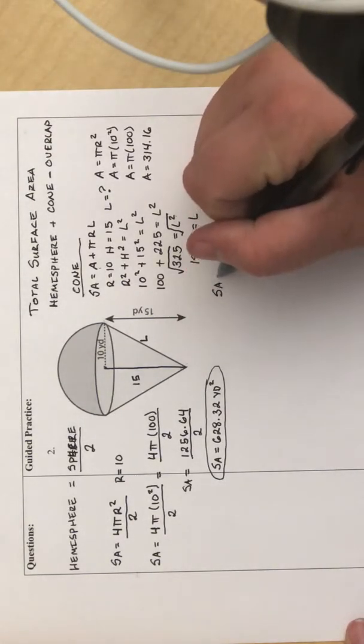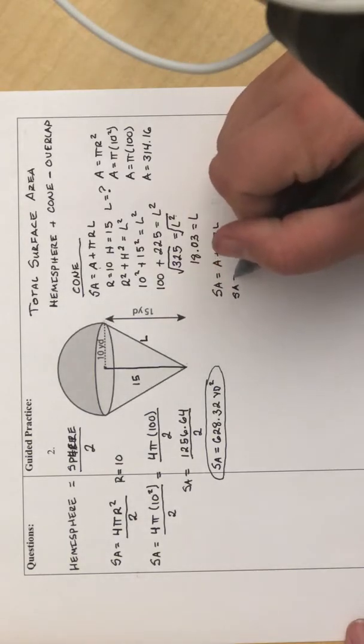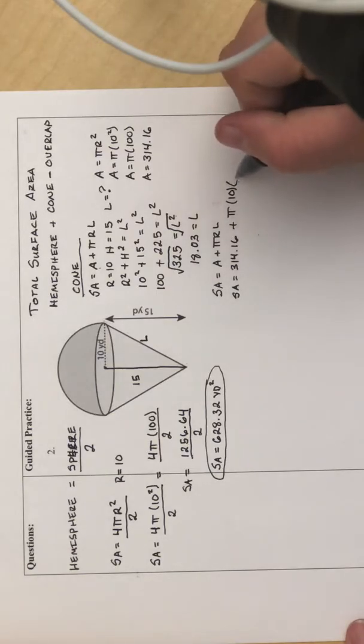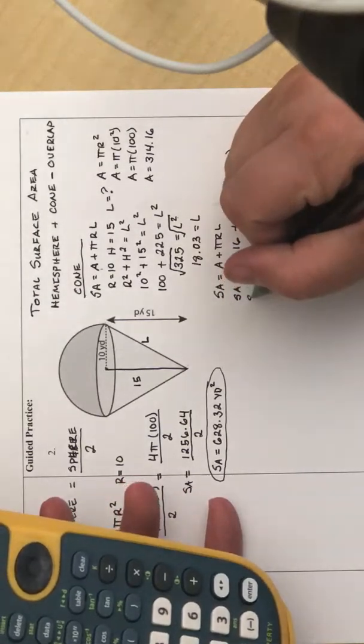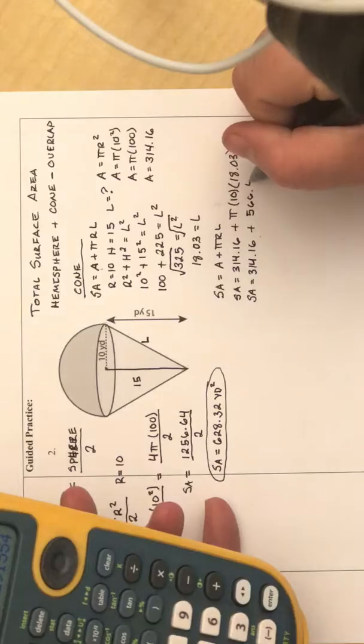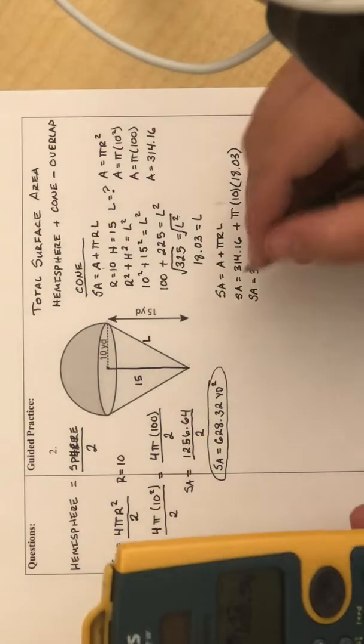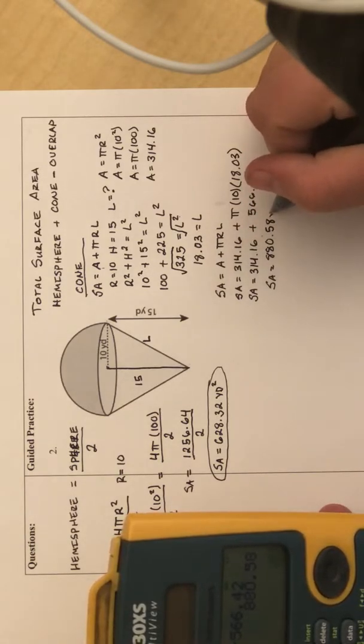I'm going to plug everything into the formula. A we just found is 314.16 plus pi times the radius of 10, and L is 18.03. So the surface area of that cone is going to be 880.58 yards squared.